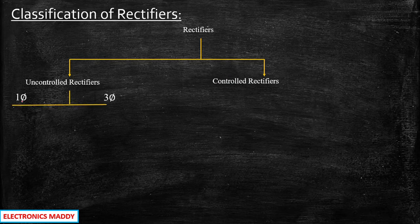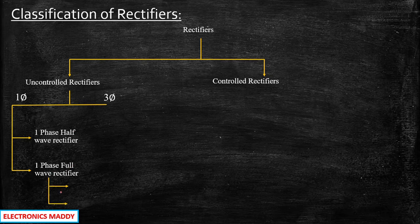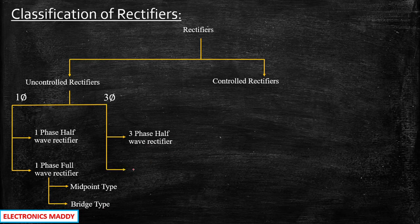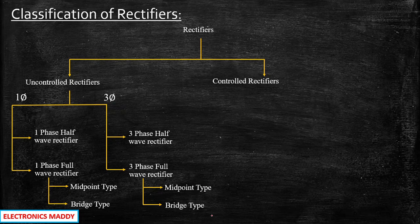Uncontrolled rectifiers are further classified into single-phase and three-phase types. In single-phase, you have the single-phase half wave rectifier, which uses one diode, and the single-phase full wave rectifier, which uses two or four diodes — giving us midpoint type and bridge type configurations respectively. In three-phase, you have the three-phase half wave rectifier and the three-phase full wave rectifier, which similarly has midpoint type and bridge type classifications.